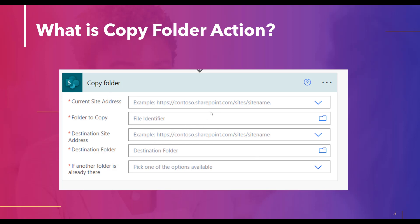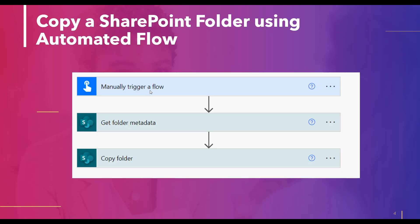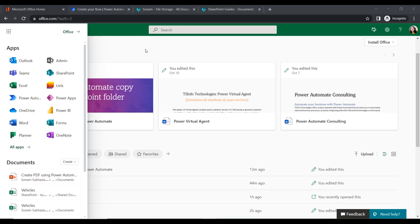Here I have created a manually triggered flow — that means a button flow. Once we tap and trigger this flow, it will get the metadata from the folder and then copy that folder from the source location to the destination location. Let's configure these actions and see how it works.